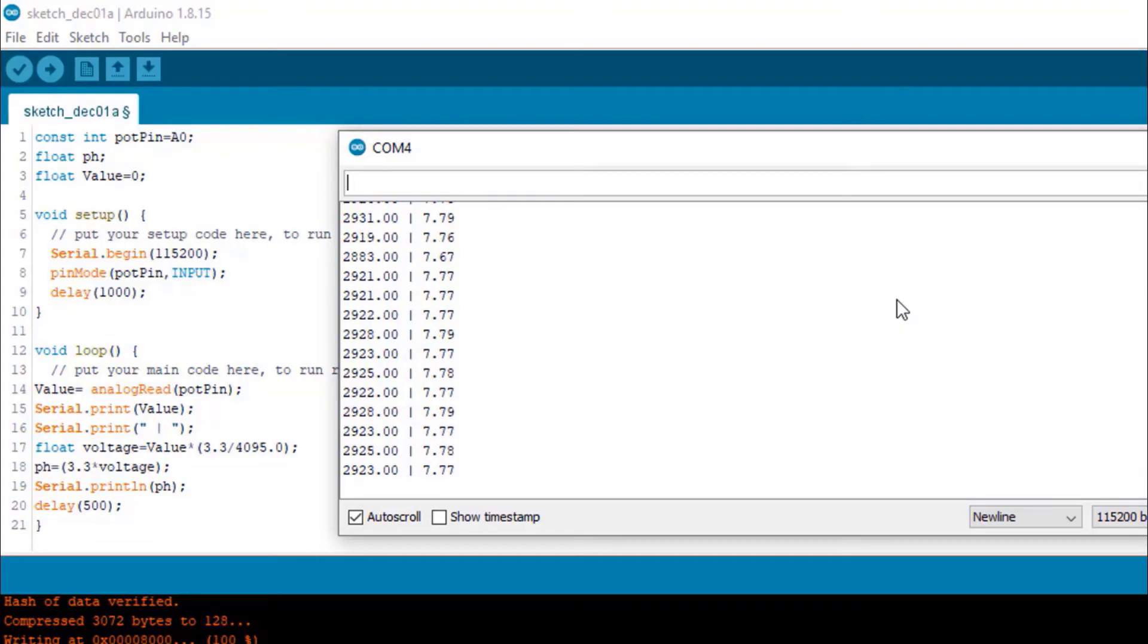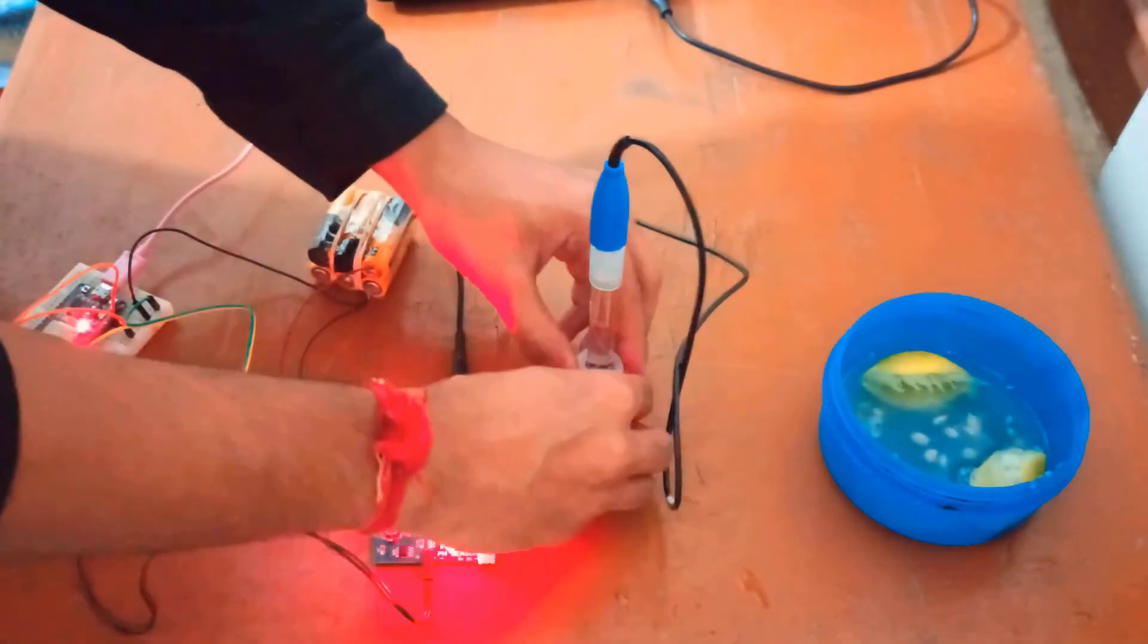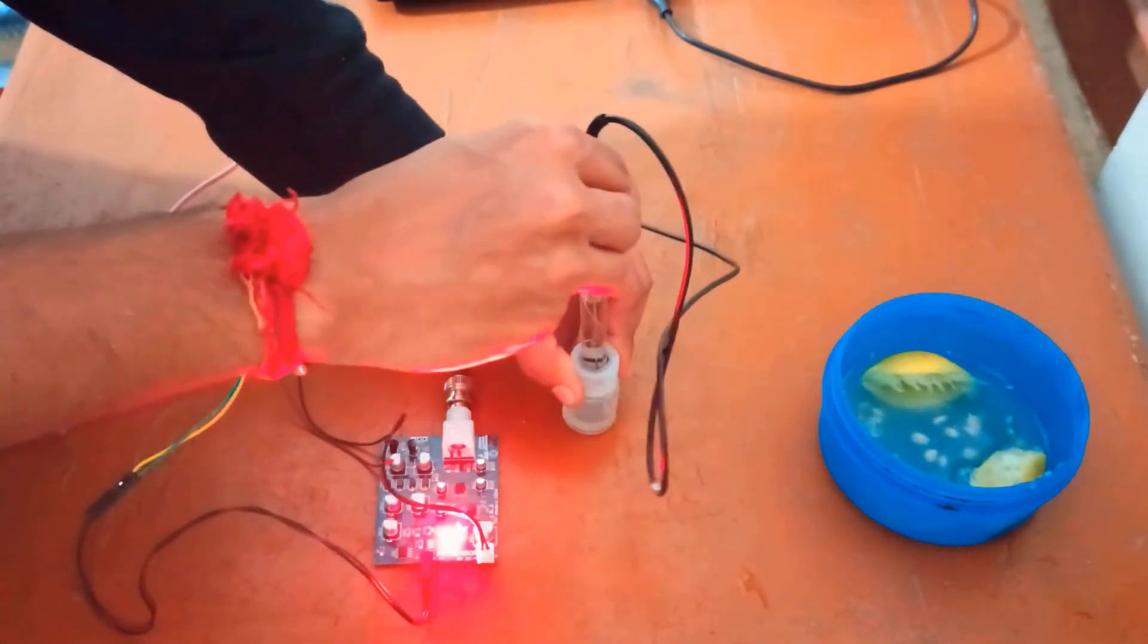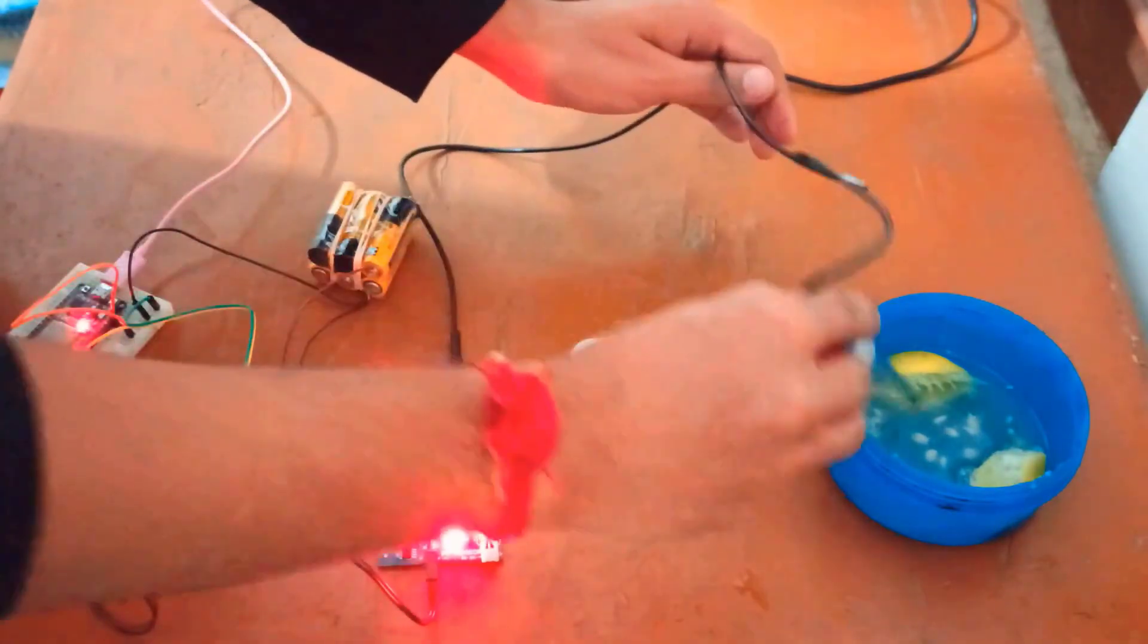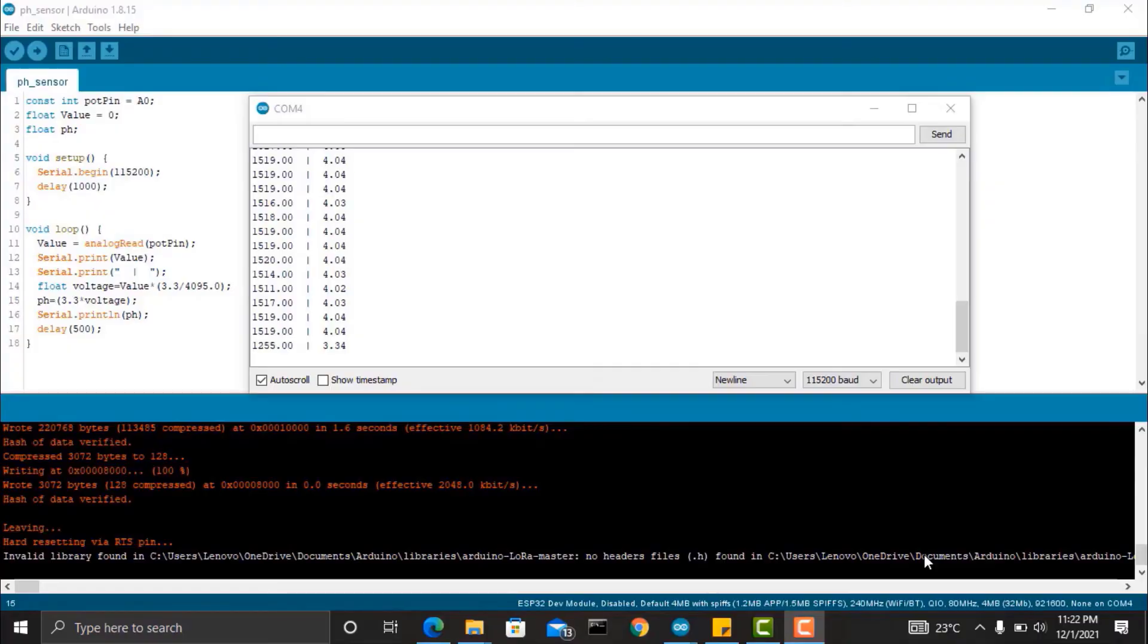But in reality, the majority of soaps have a pH within the range of 9 to 10, which can be achieved after perfect calibration. Next we need to measure the pH of lemon, so I have mixed lemon juice with water. Now let's see what the pH value is after mixing the lemon. So you can see on the screen the pH value has dropped and it goes around 3, which is the correct pH value for lemon juice. So this is how you can use this pH sensor to measure the pH value of liquids.